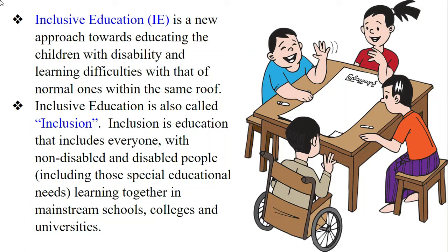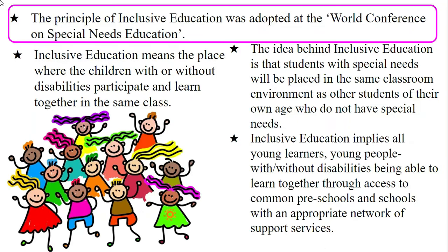Inclusive education is also called inclusion. Inclusion means education that includes everyone — both non-disabled and disabled people. Disabled people are those who are in need of special education, and they learn together with non-disabled people in mainstream schools, colleges, universities, and educational institutions. The principle of inclusive education was adopted at the World Conference on Special Needs Education.